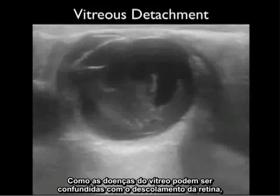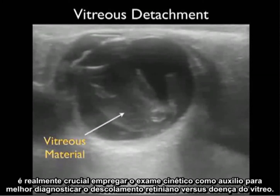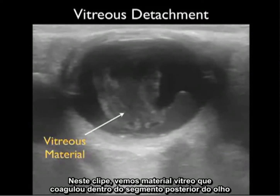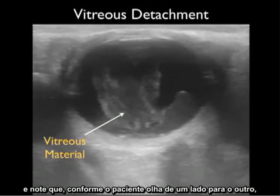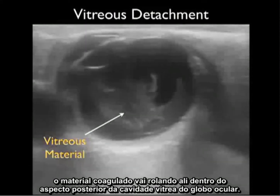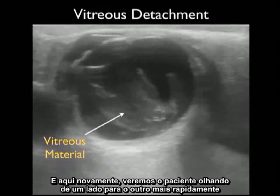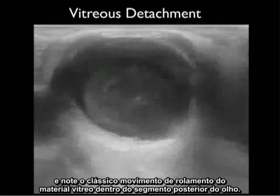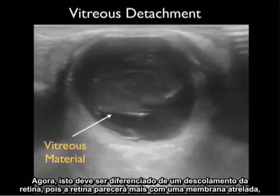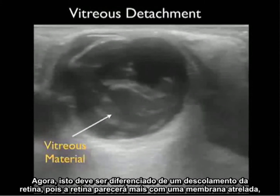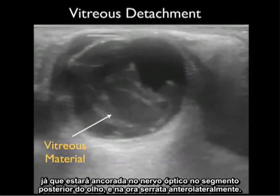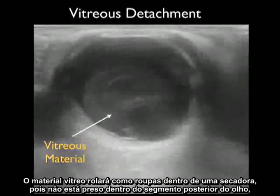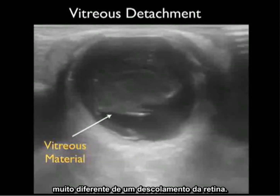Because vitreous pathology can be confused with retinal detachment, it's crucial to employ the kinetic examination to best diagnose retinal detachment versus vitreous pathology. In this clip we see vitreous material congealed within the back of the eye, and as the patient looks from side to side it tumbles around within the vitreous cavity. Notice the classic tumbling motion of the vitreous material. This is to be differentiated from a retinal detachment, as the retina will have a tethered membrane appearance — attached at the optic nerve and anterolaterally at the ora serrata — while vitreous material tumbles like clothes in a dryer.